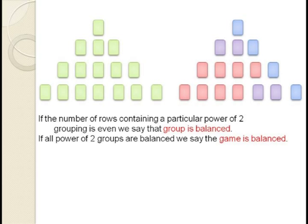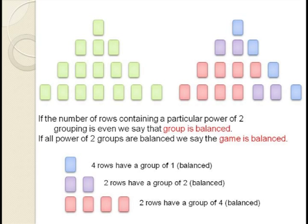We'll say that our game is balanced if every power of 2 group is balanced by a matching group in another row. In other words, we want to have an even number of rows containing each power of 2. Notice that our Marienbad pattern starts out in a balanced state, since we have two groups of 4, two groups of 2, and four groups of 1. Since we have an even number for each group, the game is balanced.